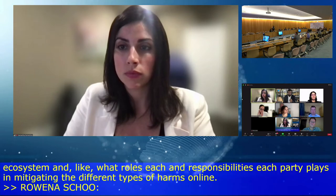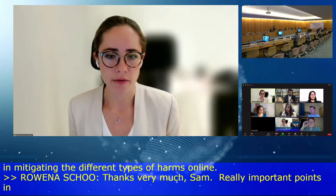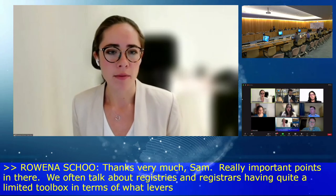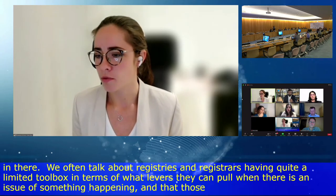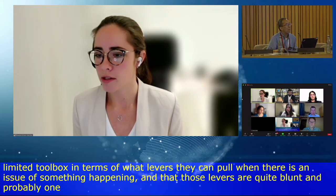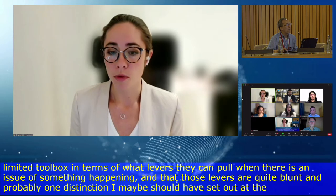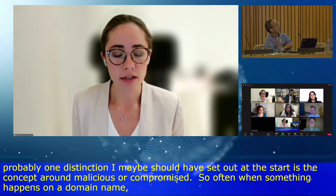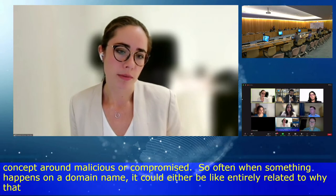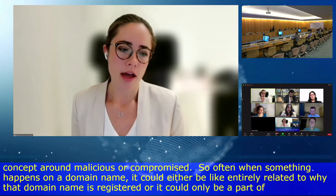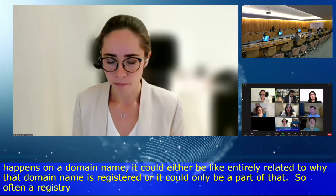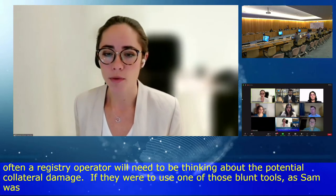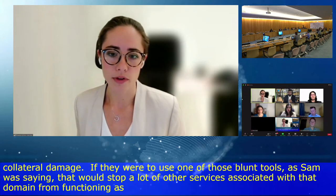We often talk about registries and registrars having a limited toolbox when there's an issue — and those levers are quite blunt. One important distinction is between malicious and compromised domains. Often when something happens on a domain name, it could be entirely related to why that domain was registered, or only a part of it. A registry operator needs to think about potential collateral damage: using those blunt tools would stop other services associated with that domain from functioning, which could cause broader societal harm.